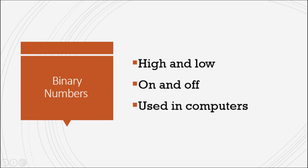Now here's just some additional facts about binary numbers real quick. They're also referred to as high and low and on and off with 1 being high and on and 0 being low and off. And they're most commonly used in computers to make decisions.